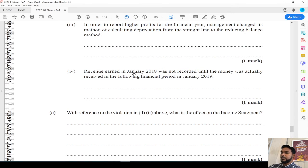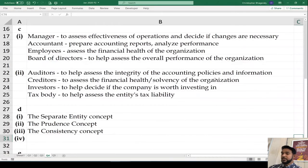Revenue earned in January 2018 was not recorded until the money was actually received in the following financial period in January 2019. That violates the accruals concept. When you earn the revenue, regardless of when you receive it, you need to put it as being earned in your income statement. Same thing with expenses - they need to be reported in the period they were incurred, regardless of if you paid them at all.